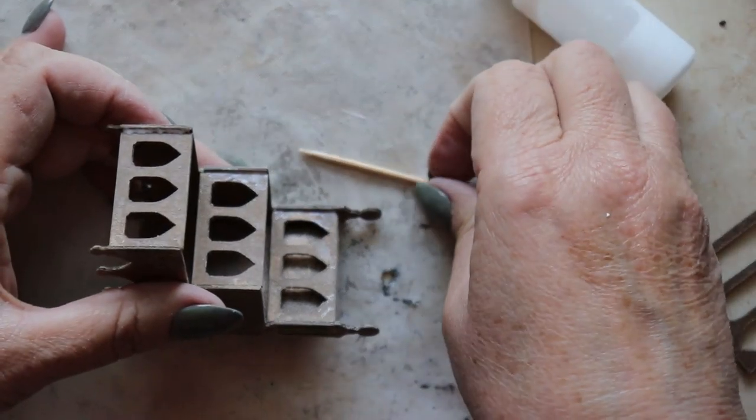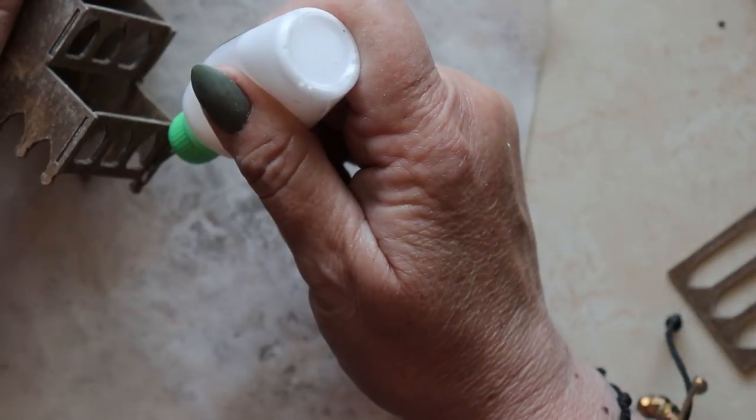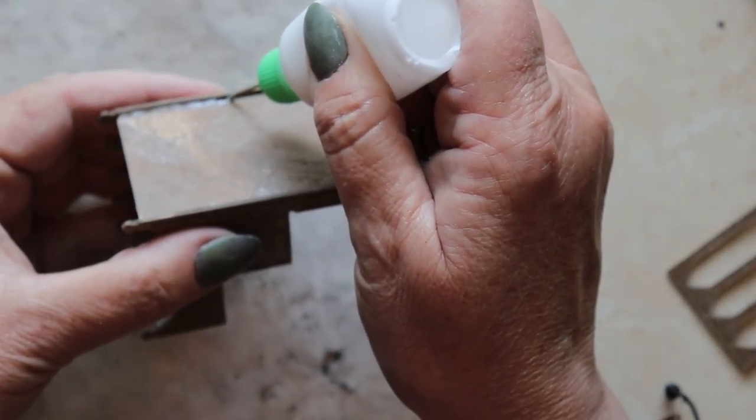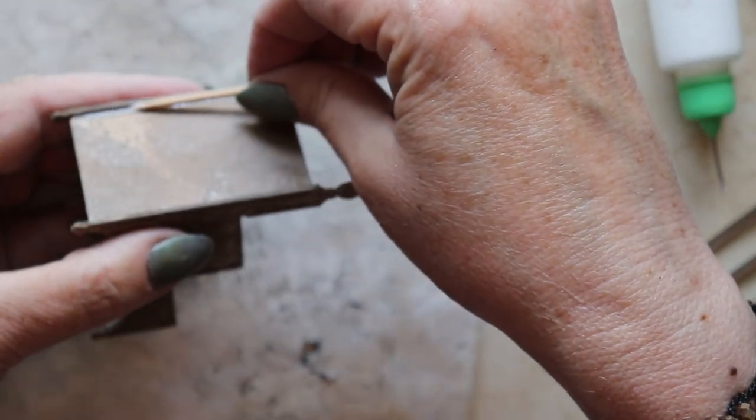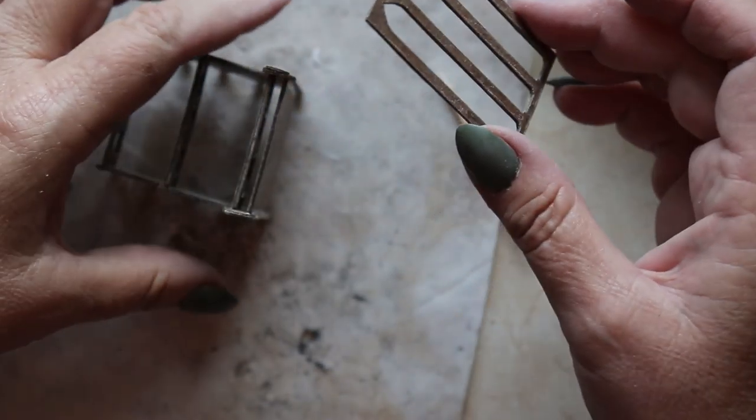Now you can apply whatever adhesive you prefer. On this piece, I've chosen to use PVA glue. I'm using it to apply the risers and also to secure the back panel.